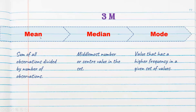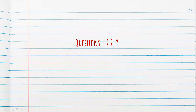Let us now compare mean, median, and mode. Mean is nothing but sum of all observations divided by number of observations. Median is the middlemost number in the number set. Mode is the value that has the highest frequency in a given set of values. If you have any questions on this concept, put them in the comment box so that we can discuss. Thank you.